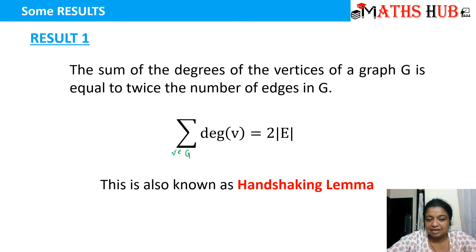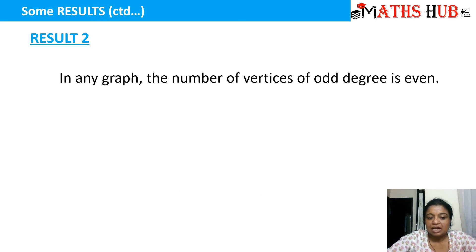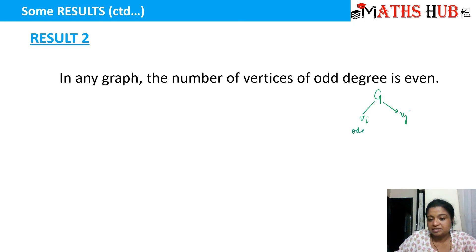The next result says that in any graph, the number of vertices of odd degree is even. So in a graph G, if we label some vertices VI as odd-degree vertices and others VJ as even-degree vertices, then the number of odd-degree vertices is always even.